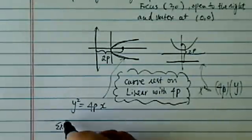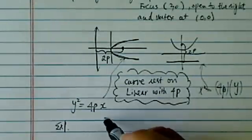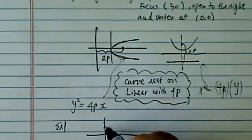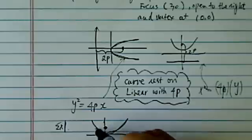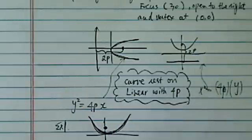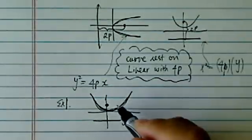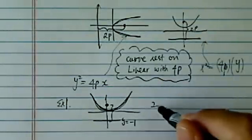Let's take a look at our example here. Example 1 says the focus is at (0,1), and directrix is y equals minus 1, here's your curve. Not a pretty one, but hopefully you get the point. And the distance between here is 2p,